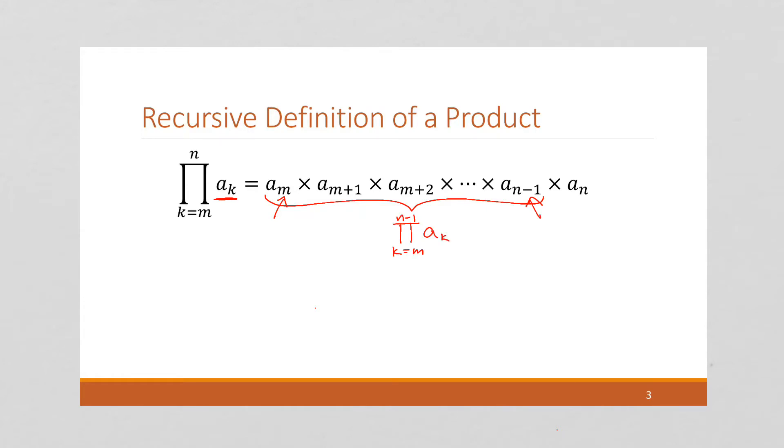And then we've got this same term with the index K. So what I can do is I can rewrite this entire product as the product from K equals M to N minus 1 of A of K times this last term. And just to clarify, it's a good idea to put parentheses around that.